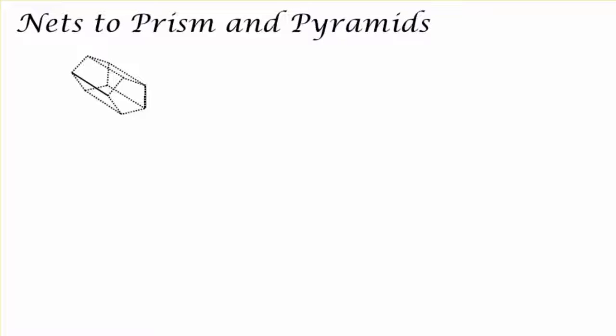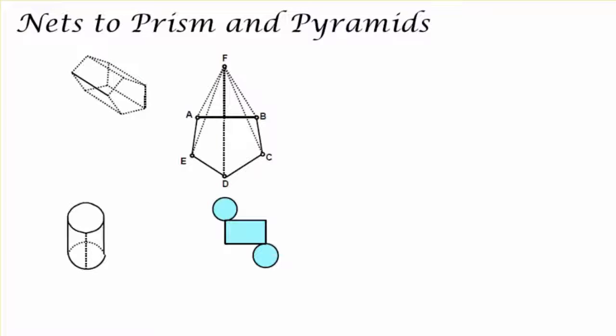Now as I think about nets of prisms and pyramids, we'll take a look. If I fold up that net of that pyramid, although this example does have rectangles, I can see I achieved exactly what was being described: a pentagonal prism and a pentagonal pyramid.